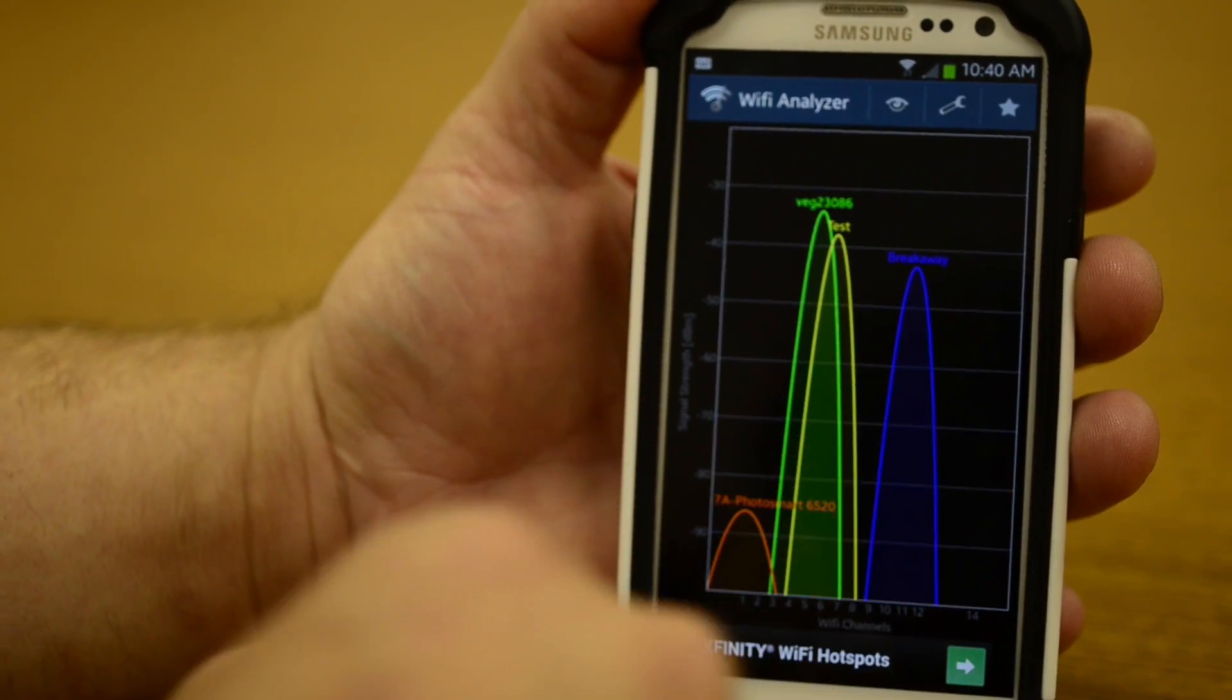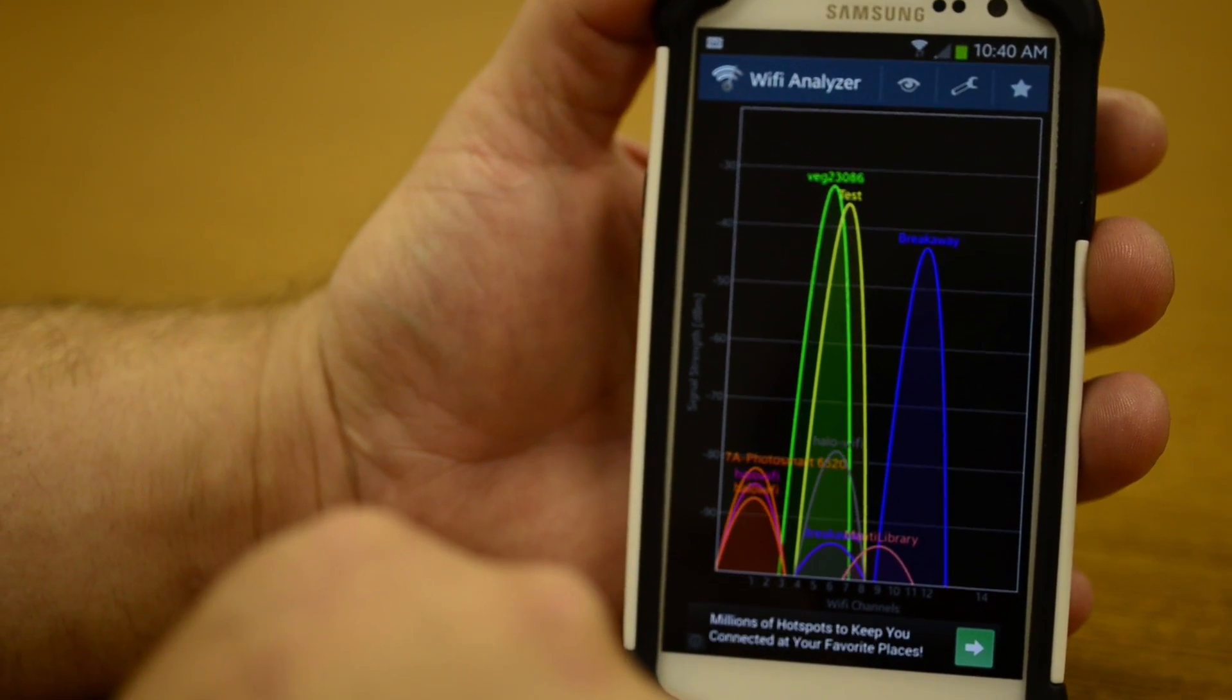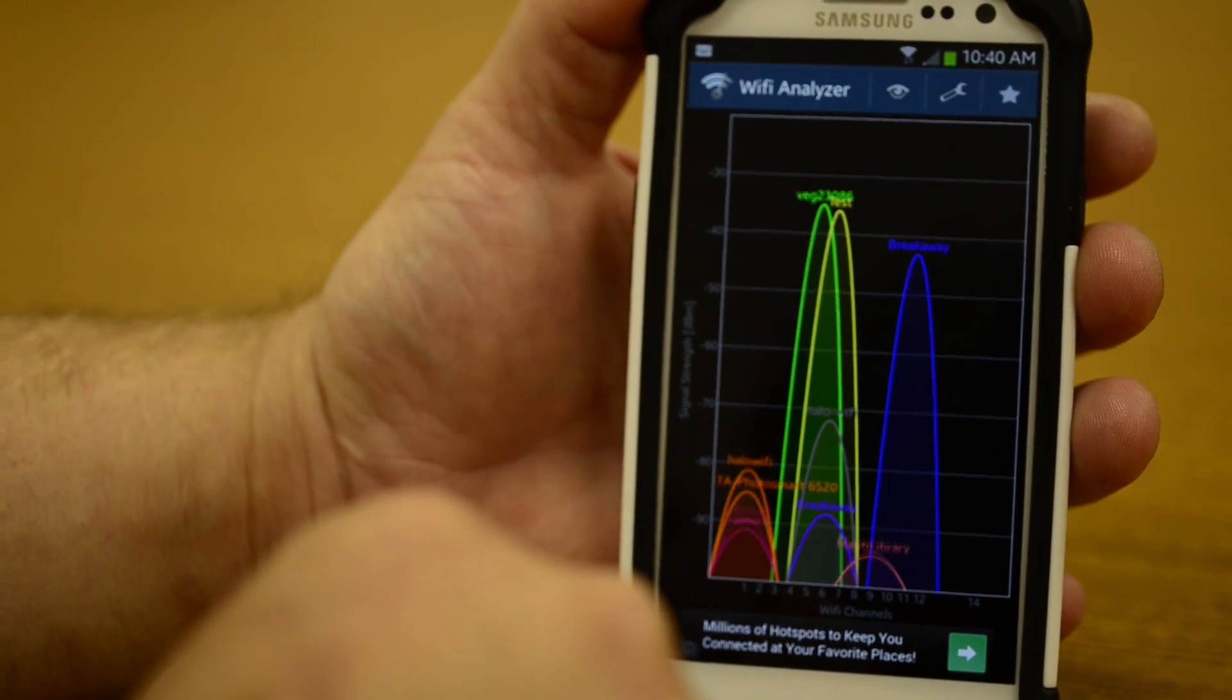One thing you can see is that there are a lot of wireless signals, and a lot of times they can interfere with each other and cause problems.